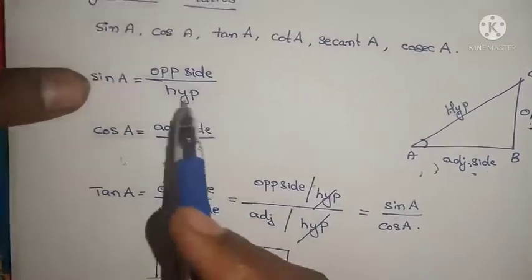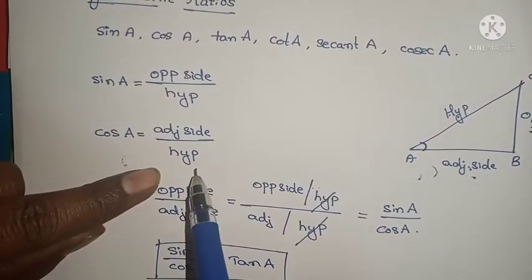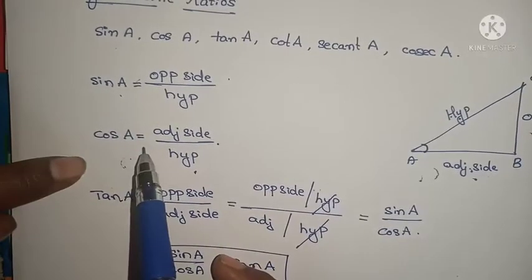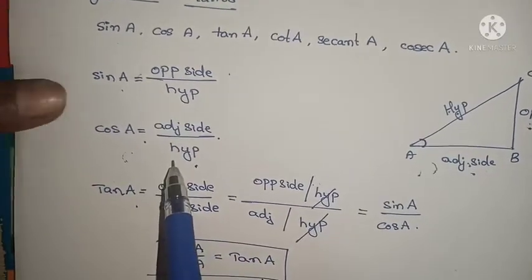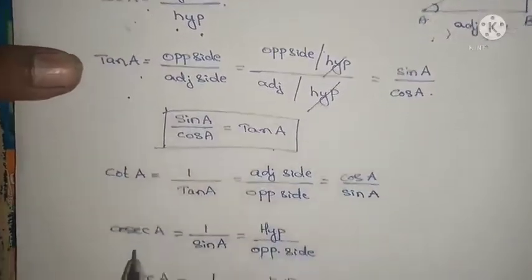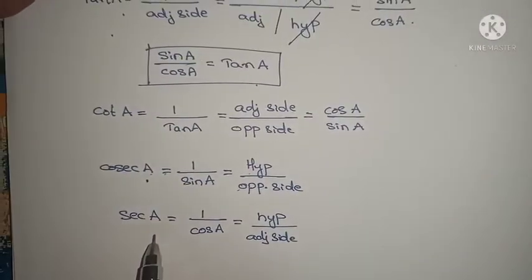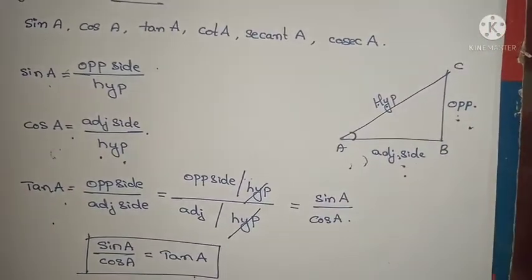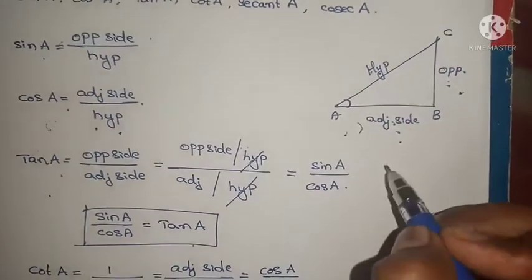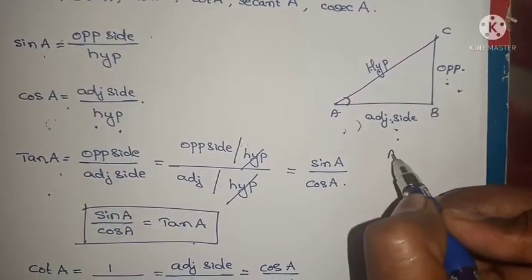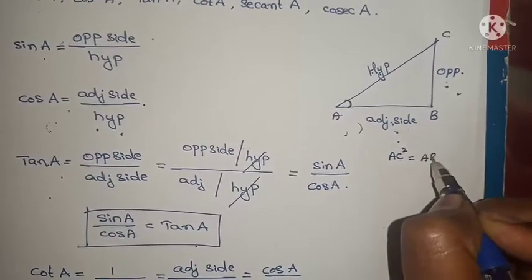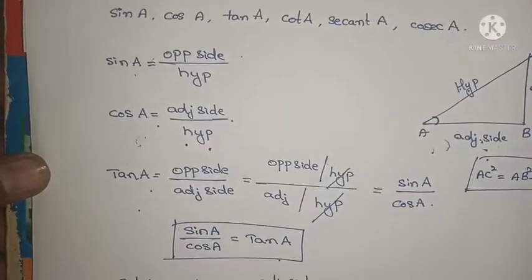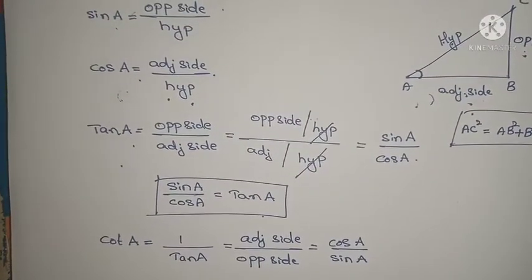A shortcut to remember: for sin and cos, the denominator is hypotenuse. Sin uses opposite side, cos uses adjacent side. Tan equals sin by cos. Cot equals 1 by tan. Cosecant equals 1 by sin. Secant equals 1 by cos. Also, if any two sides are known, the other side can be found using the Pythagoras theorem: AC² = AB² + BC². Using this theorem and these formulas, we can find all sides and angles.